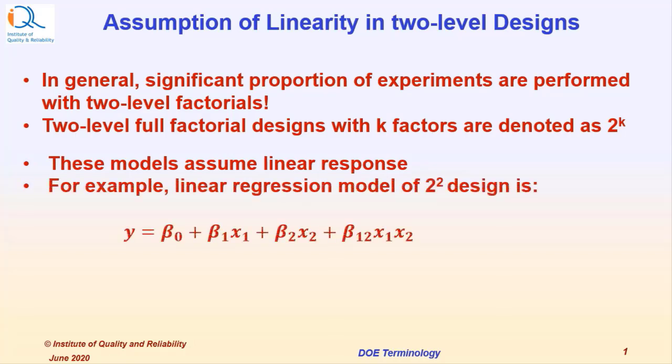For example, a linear regression model of 2 to the power 2 design is given by y equals beta 0 plus beta 1 x1 plus beta 2 x2 plus beta 12 x1 x2, where x1 and x2 are the settings of the factors A and B.